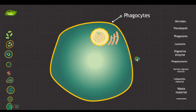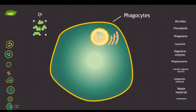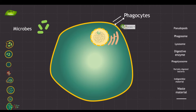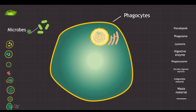What phagocytes do is look for invaders such as bacteria. This here is an example of bacteria. Among microbes you have fungi, viruses, and bacteria — I'm just taking the example of bacteria. The role of phagocytes is to find these microbes and, using a cellular signaling mechanism, engulf these particles to eliminate them.